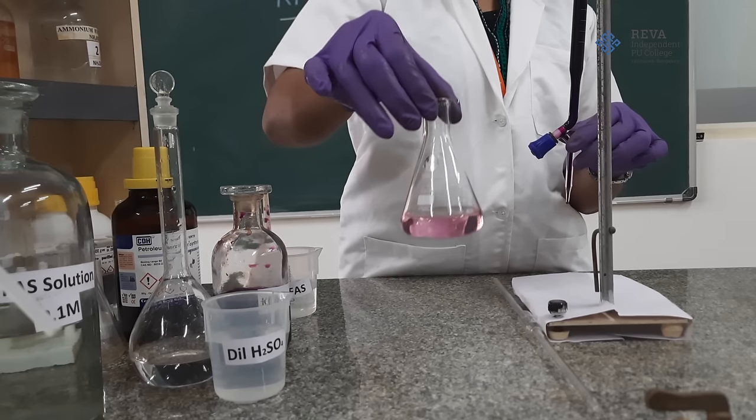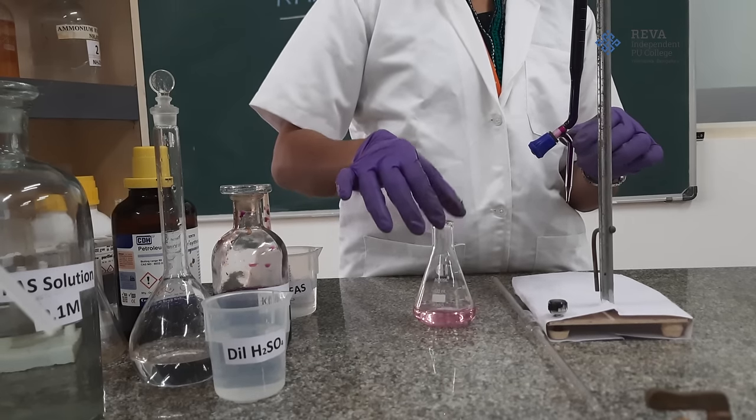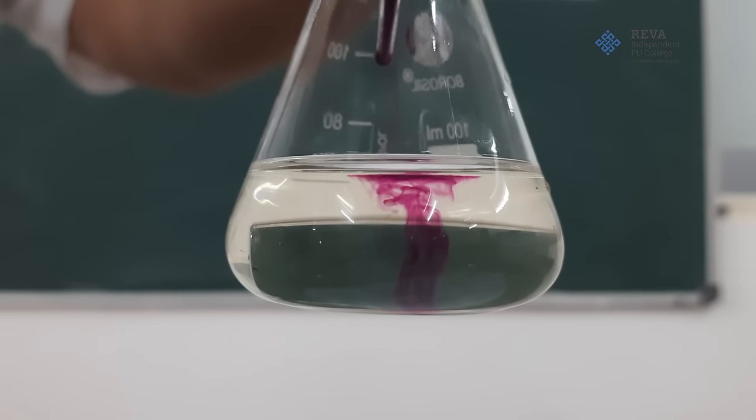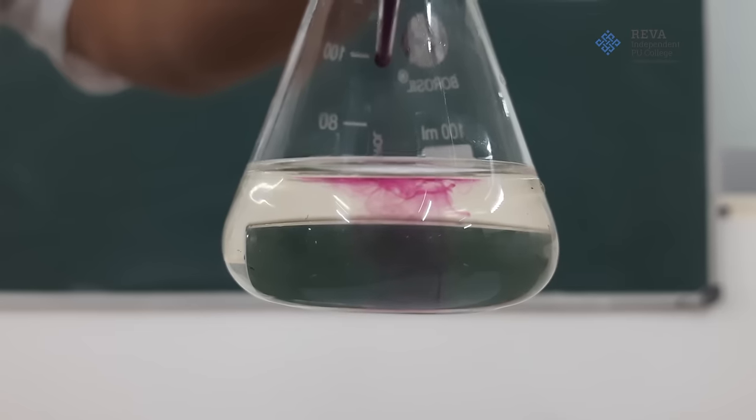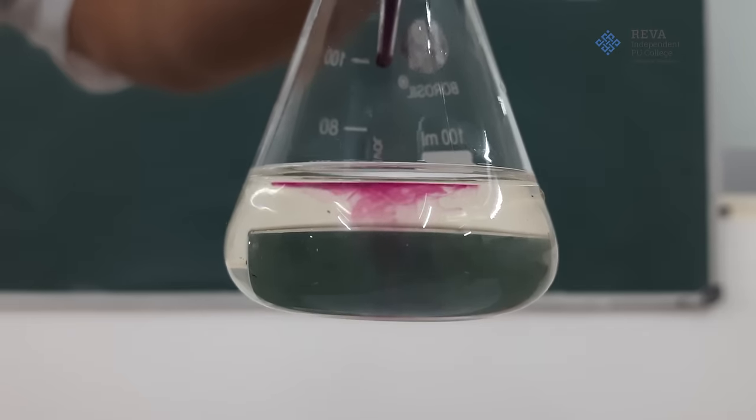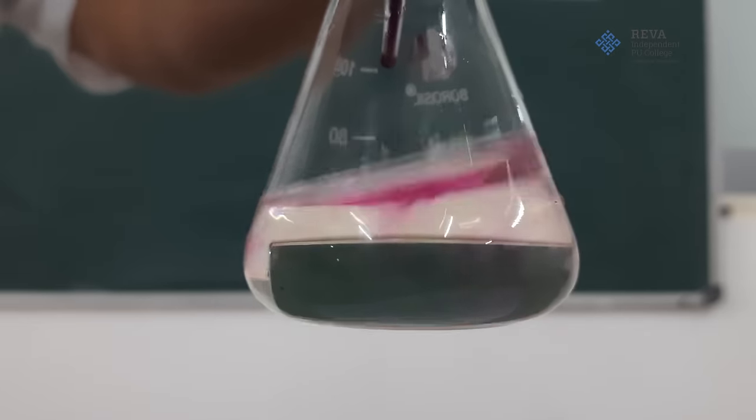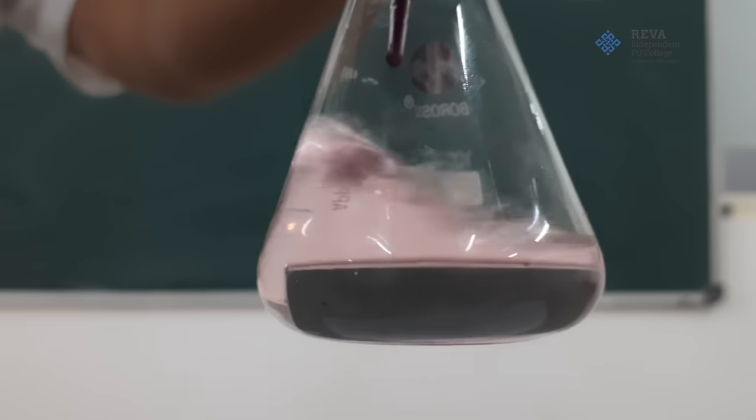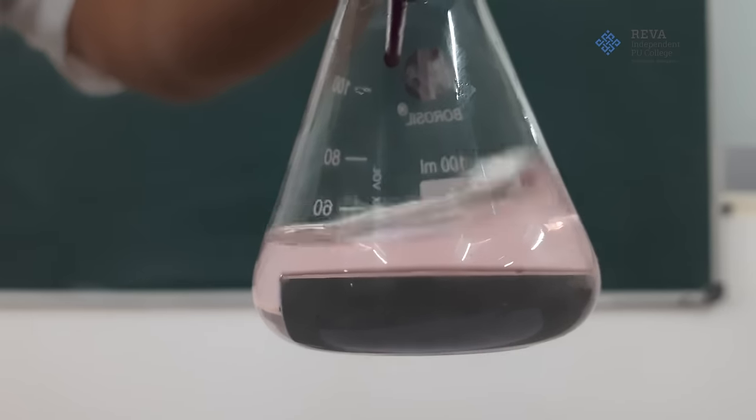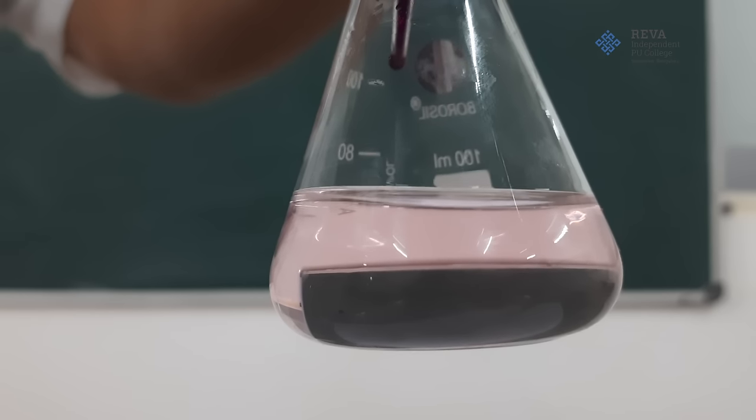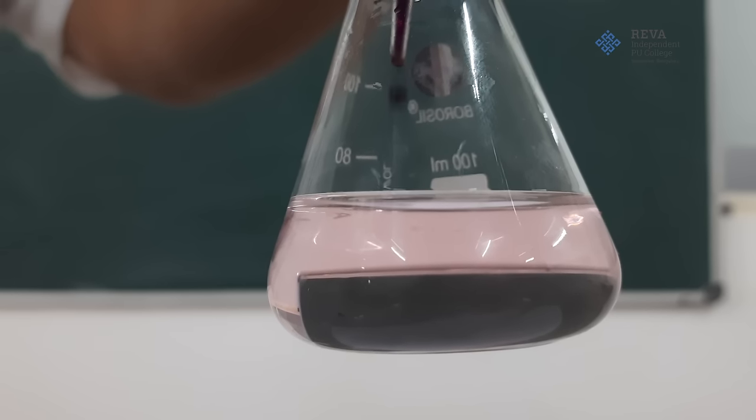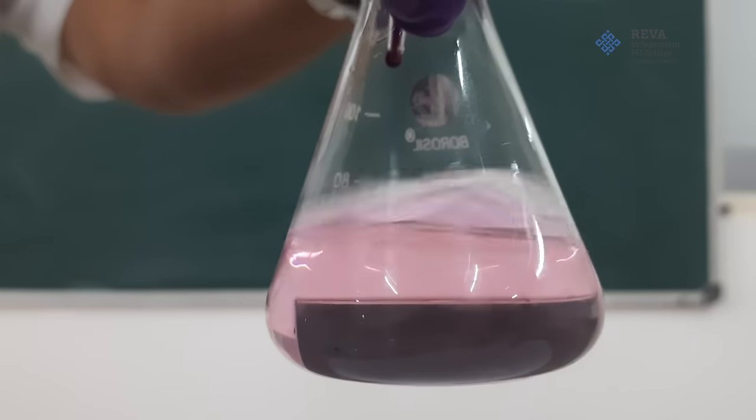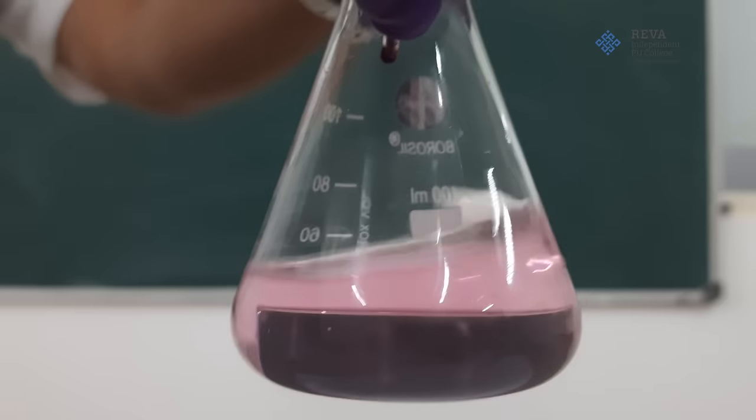This indicates the end point of the titration. Appearance of permanent pale pink color is due to excess drop of potassium permanganate which is not reacting with ferrous ammonium sulfate indicating that all ferrous ammonium sulfate is used up. And no more to react means all ferrous ion is converted into ferric ion indicating an end point.